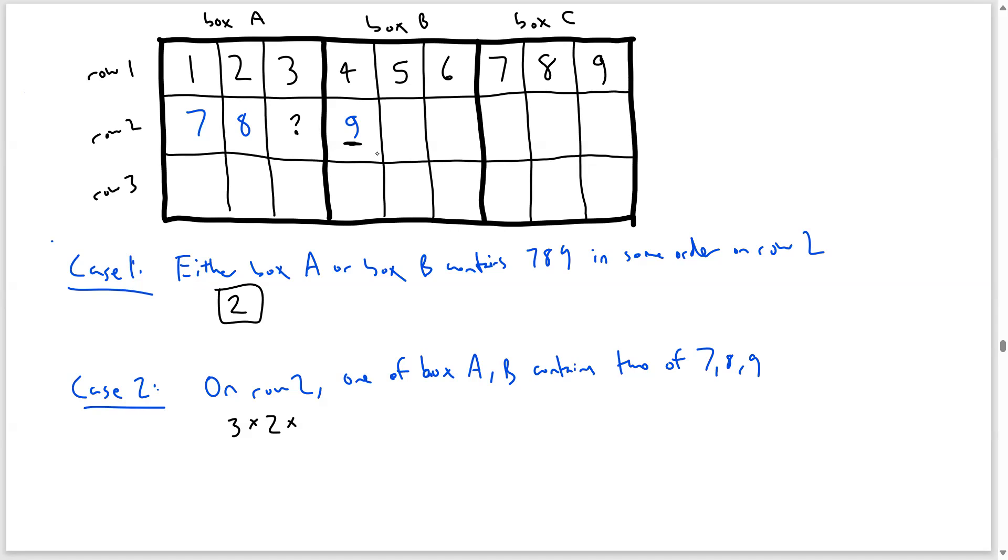Now this question mark cannot be 1, 2, 3, cannot be 7, 8, 9. It has to be one of the numbers 4, 5, and 6. There are 3 ways to do that. Just for example, let's say that I chose 4.